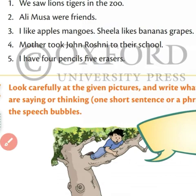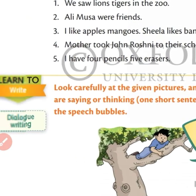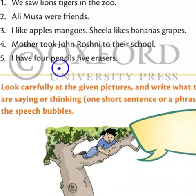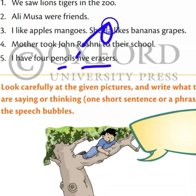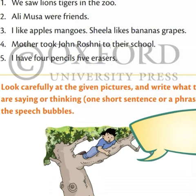I have four pencils and five erasers. Four pencils and five erasers — these are two things, two words. So between these two words we have to use 'and': I have four pencils and five erasers. Hope you understood.